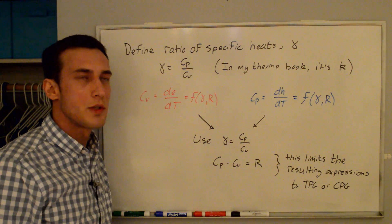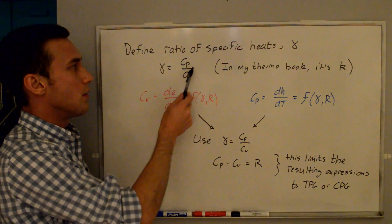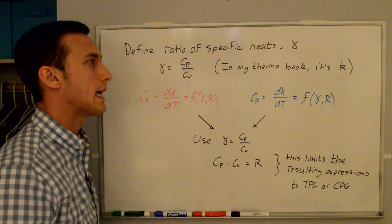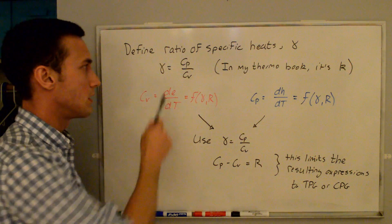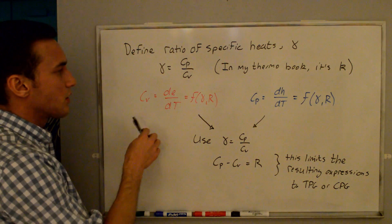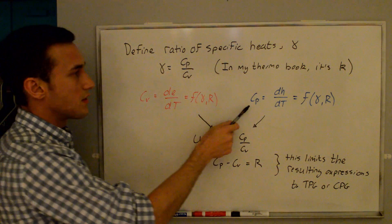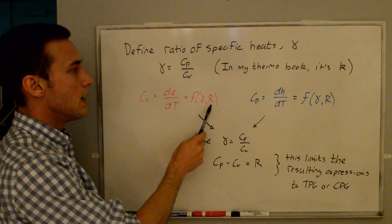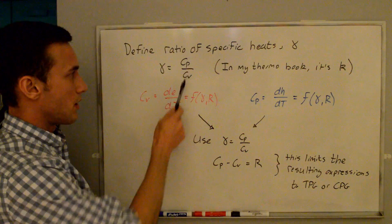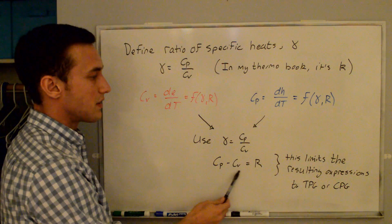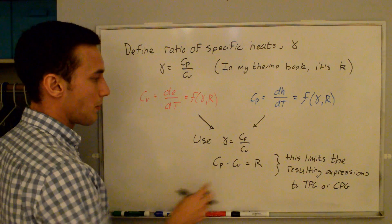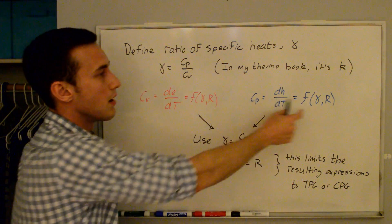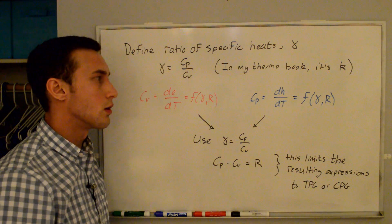Now I'm going to define the ratio of specific heats gamma as the ratio cp over cv. In some thermodynamics textbooks it's called k, but in most gas dynamics books you'll see it as gamma, so I'll use gamma. From our discussion, cv equals dE/dT and cp equals dH/dT. We can write cv and cp as functions of the specific heat ratio gamma and the specific gas constant R, using gamma equals cp/cv and cp minus cv equals R. Note that the resulting expressions are limited to thermally perfect or calorically perfect gases.